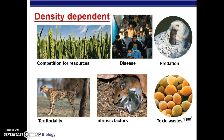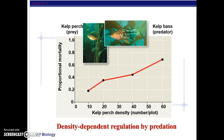Density-dependent factors include competition for resources, disease, predation, toxic waste, intrinsic factors, some population behaviors, and territoriality — which again relates to competition. You need to know these different types of factors. There is also a graph showing density-dependent regulation due to predation — pause and study it, as it can likely be found in your textbook. Being able to interpret graphs is always important in this course.